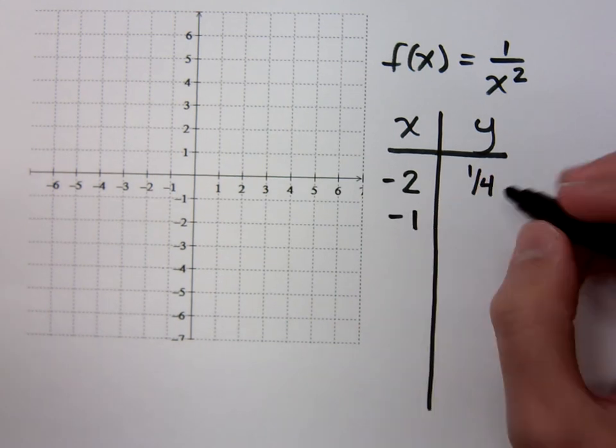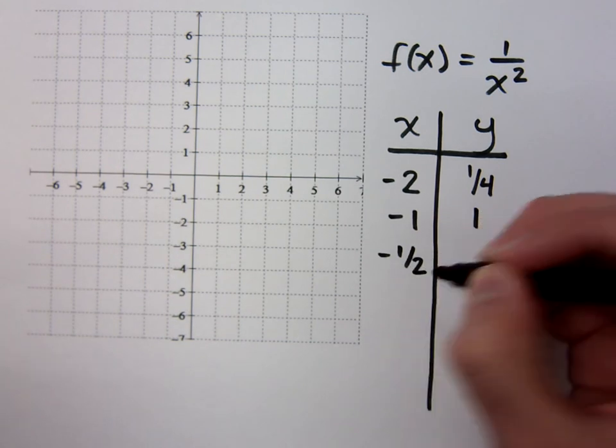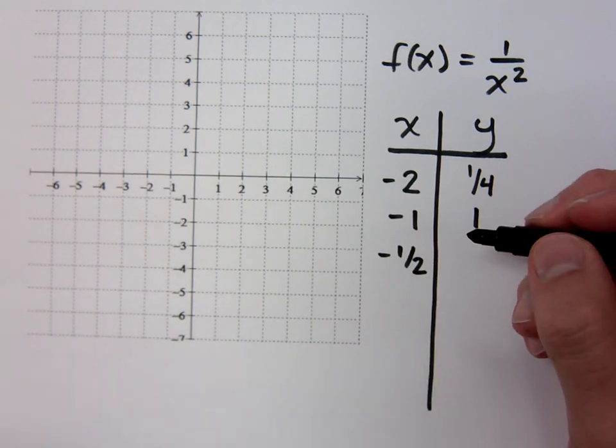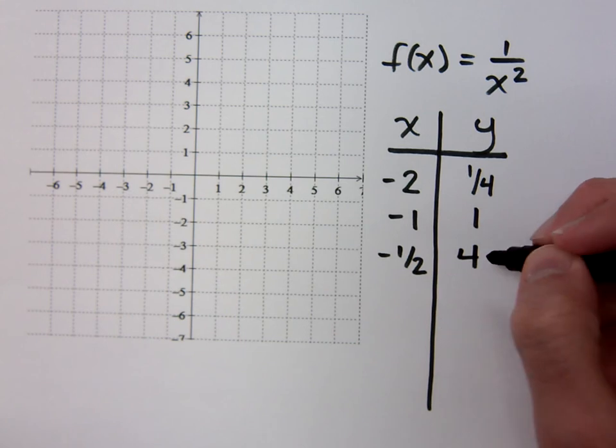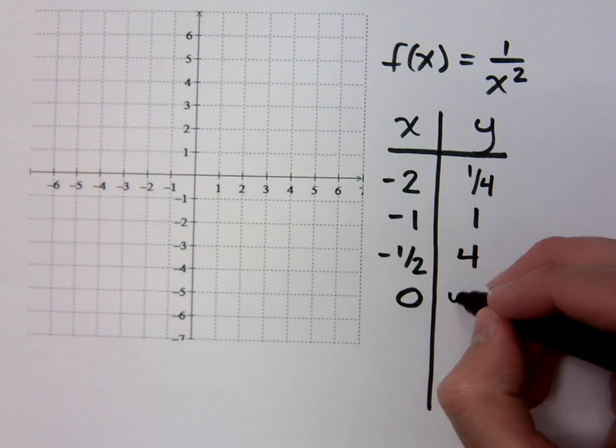What if I plug in negative 1? 1. If I plug in negative 1 half, what do you get? Well, I get 4. If I plug in 0, what happens? It's undefined.